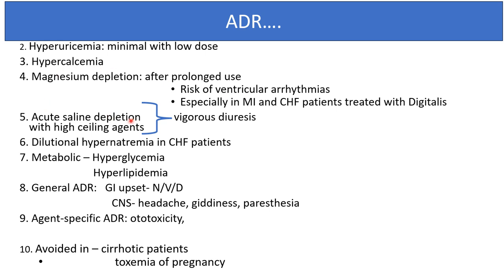Acute saline depletion can occur with high-ceiling agents due to vigorous diuresis. Dilutional hyponatremia can occur in CHF patients. Metabolic effects include hyperglycemia and hyperlipidemia. General adverse effects include nausea, vomiting and diarrhea. CNS adverse effects include headache and paresthesia. Agent-specific adverse drug reactions include ototoxicity, and loop diuretics should be avoided in toxemia of pregnancy and cirrhotic patients.